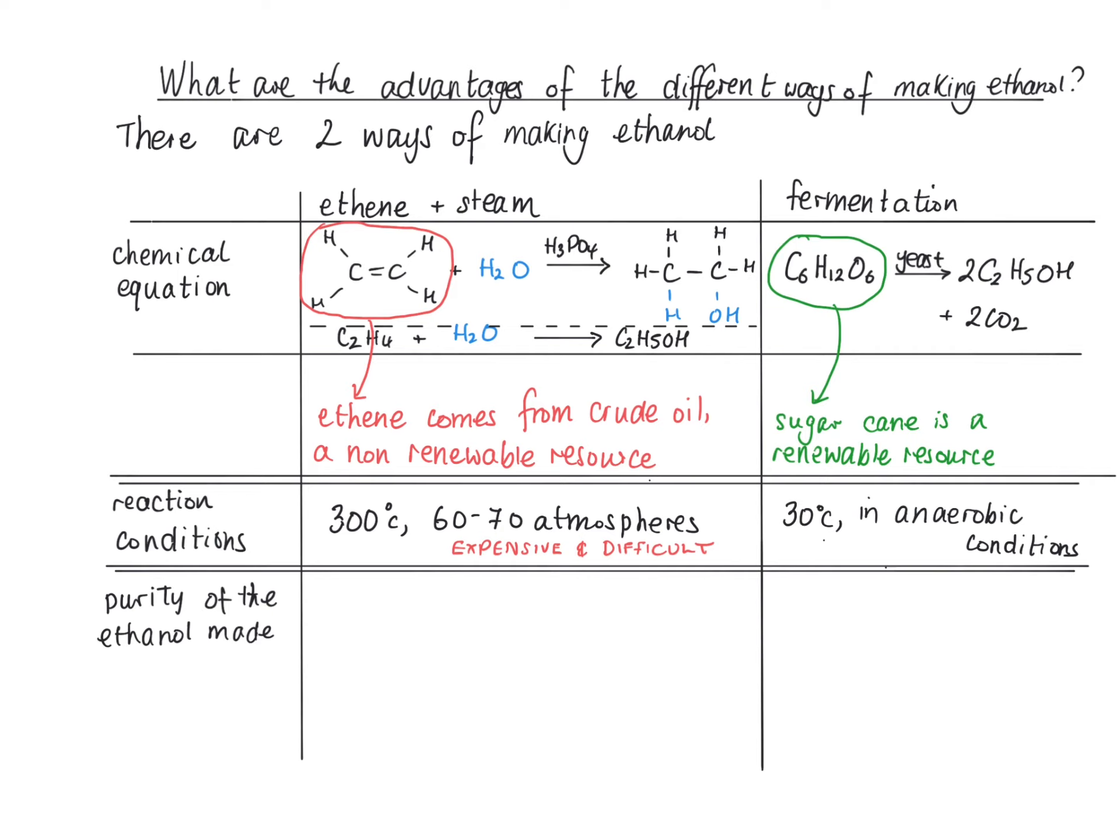Moving on to the purity of the ethanol made. The purity of the ethanol made from the ethene plus steam method is very pure. However, compare that with fermentation. The ethanol made from fermentation isn't very pure. If you want to have pure ethanol from fermentation, you have to purify it by distilling it.